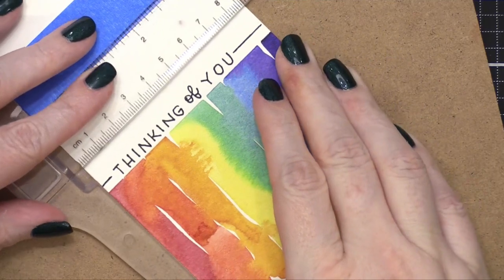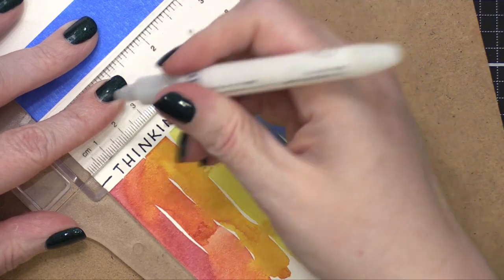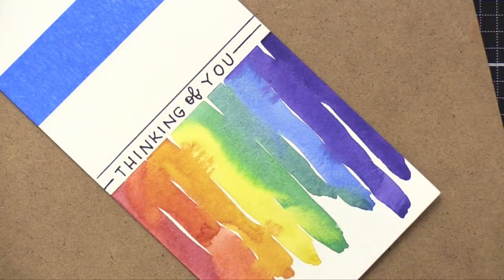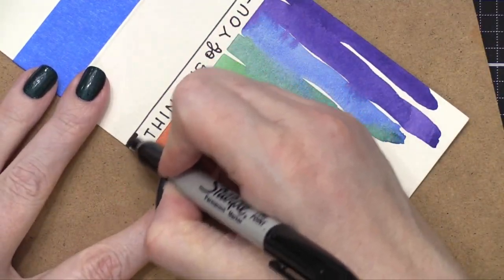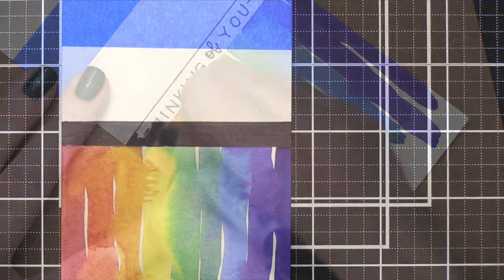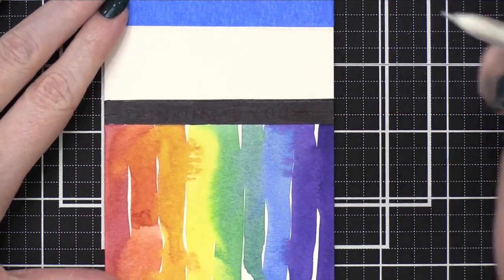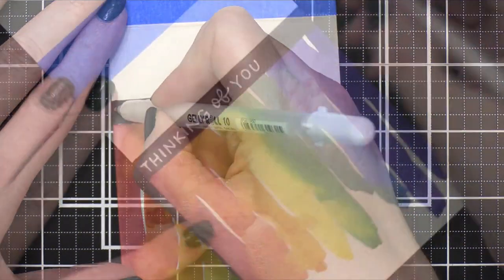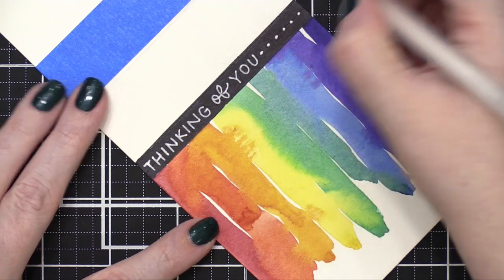So what I'm going to do is using my ruler, I'm going to draw another line right above. And then I'm going to fill in that entire area with black and write my greeting over the top. I filled in that area and I'm going to write my greeting in my white gel pen. I'm just going to have it start off to one side. And then some dots to finish it off.